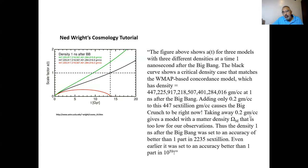Similarly, if we take away 0.2 grams per cubic centimeter from 447.6 trillion grams per cubic centimeter, we have a matter density omega that's too low for our observations — something that would not have allowed stars and planets to form. The density of the Big Bang at one nanosecond after the explosion was set to an accuracy of better than one part in 2,235.6 trillion. You can imagine the fine-tuning involved.